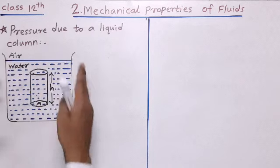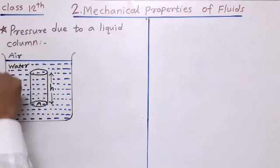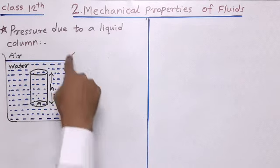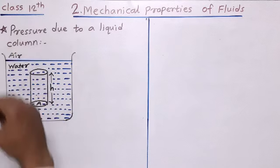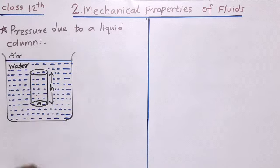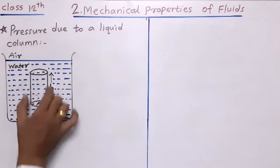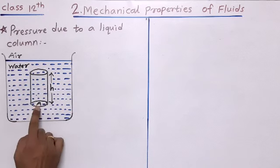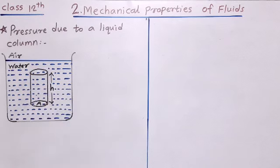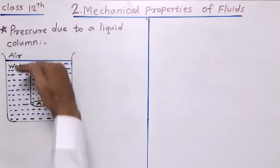First of all I'm going to describe this figure. Here you can see this is a container in which a liquid is filled up. There is air outside the container and water inside the container. Inside this water we are considering an imaginary cylinder having a cross-sectional area A.